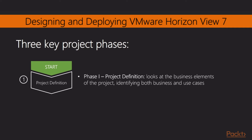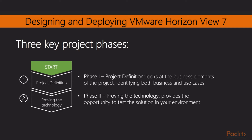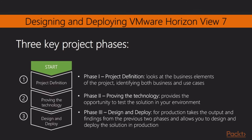The first phase is project definition. In this phase, we are going to look at the business elements of the project, identifying both business and use cases. We'll also conduct an assessment to understand the current environment, both from a user's perspective and also from an infrastructure overview perspective. The second phase is all about proving the chosen technology and that it delivers against all your requirements, giving you the opportunity to test the solution in your own environment. The final phase is all about taking the information from the first two phases, along with the assessment data, and then designing an environment that suits your requirements. Don't forget to refer back to your project definition and success criteria to ensure you remain on track with the original goals.